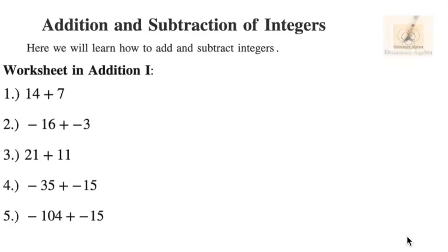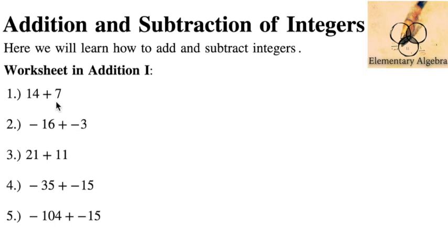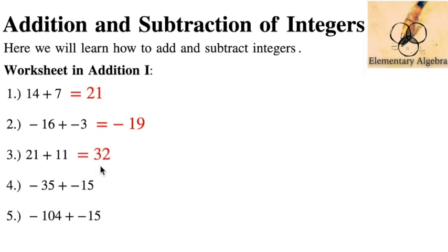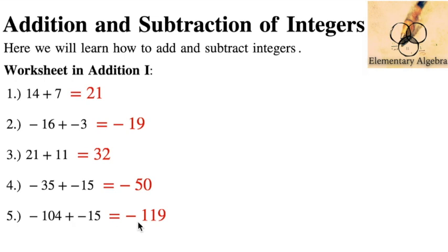Let's check your answers. Number 1: 14 plus 7 — they're both positive, the answer is clearly 21. Number 2: negative 16 plus negative 3 — they're both negative, 16 plus 3 is 19, copy the sign, the answer is negative 19. Number 3: 21 plus 11 is simply 32. Number 4: negative 35 plus negative 15 — 35 plus 15 is 50, with minus signs, so it's negative 50. Number 5: negative 104 plus negative 15 is negative 119. Hopefully you got a score of 3 and above.